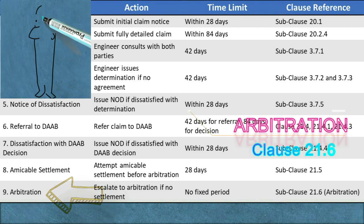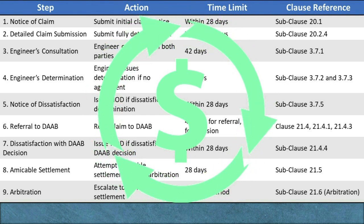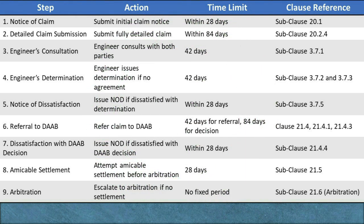Step 9: Arbitration (Subclause 21.6). Action: If amicable settlement efforts are unsuccessful, either party may escalate the dispute to international arbitration. Arbitration is conducted in accordance with the International Chamber of Commerce rules, by one or three arbitrators as agreed upon by the parties. The arbitration award is binding, final, and enforceable. If the arbitration award requires payment, the amount is due immediately without further certification or notification. The arbitrators have the authority to review any DAAB decision that is not final and binding. Clause Reference: Subclause 21.6 — Arbitration. Purpose: Arbitration offers a definitive, binding, and enforceable resolution — the final step in the dispute resolution process under the FIDIC Yellow Book 2017.